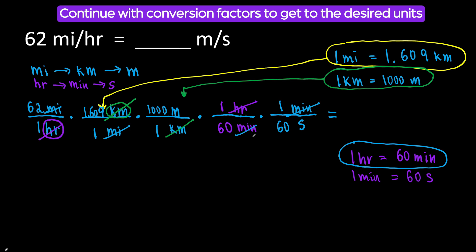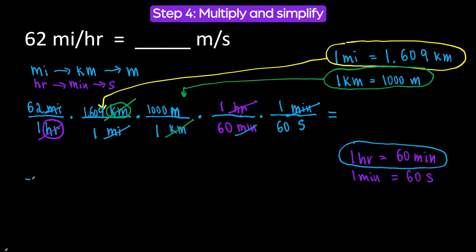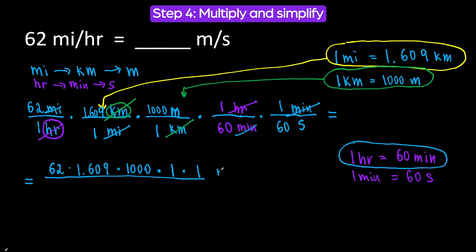Before we do the math, let's eyeball what we have. We have meters per second — we got exactly what we needed. Now let's do the math. Go back from the very beginning and pick up all the numbers. Draw the fraction bar — basically we are multiplying all these fractions together. When you multiply fractions, you multiply the numbers in the numerator, then multiply the numbers in the denominator. So: 62 times 1.609 times 1,000 times 1 times 1 — we will have meters in the numerator. And on the bottom: 1 times 1 times 1 times 60 times 60 — and we will have seconds.